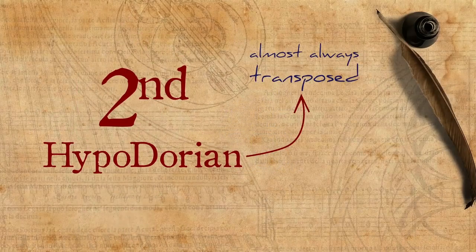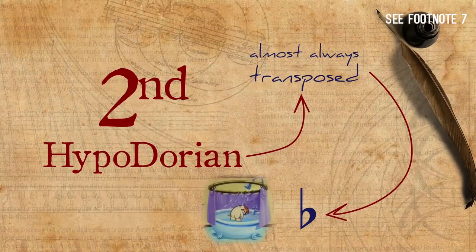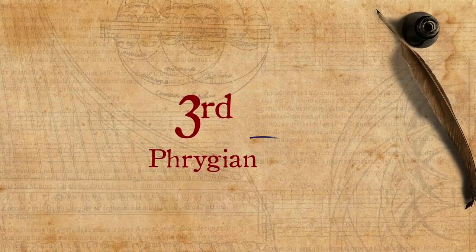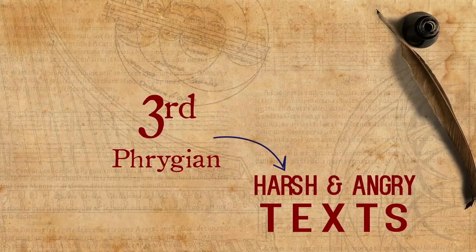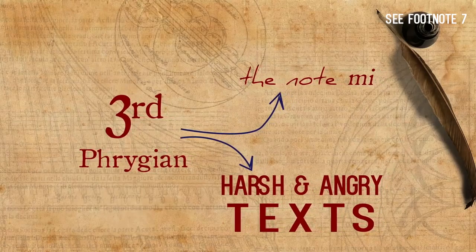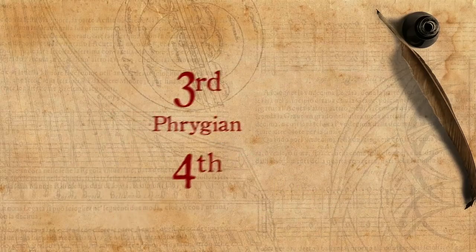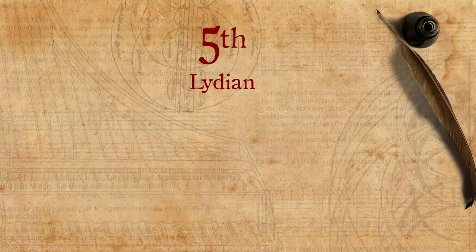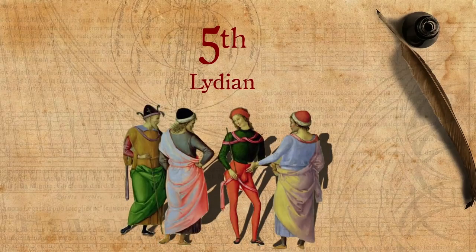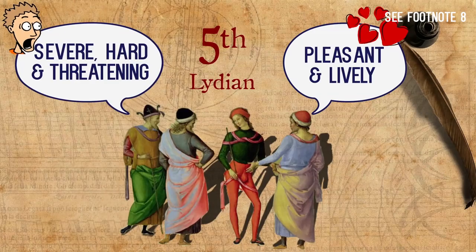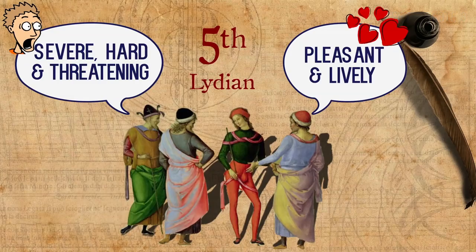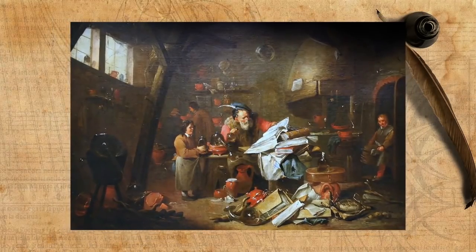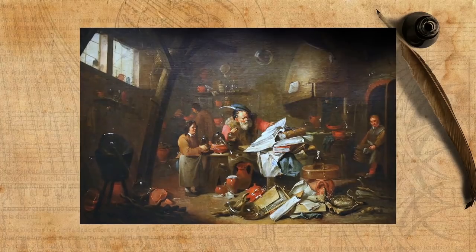Specifically, the second mode is almost always transposed higher, but then it has a flat, which gives another reason to categorize it in a more sad or soft class. Another rather consistent point is the description of the third mode as suitable for harsh and angry texts. This might be because this mode is based on the note Mi, which is considered hard and harsh in Renaissance terms. However, some theoreticians wrote that this mode, as well as the fourth mode, are appropriate for mournful subjects and lamentations. In the case of the Lydian mode, there are extreme inconsistencies: some wrote that this mode is pleasant and lively, while others wrote that it is severe, hard and threatening. These inconsistencies might be explained by the fact that different writers were referring to different mode theories, but all in all, this kind of confusion is very familiar for those who are interested in modes — back then and today.